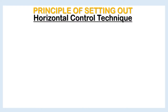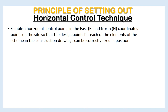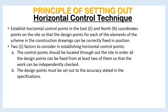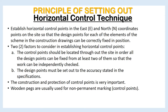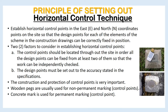The principle of setting out for horizontal control technique is to establish horizontal control points in the east and north coordinate positions on the site so that the design points for each element of the scheme in the construction drawings can be correctly fixed in position. Two factors to consider: control points should be located throughout the site so that all design points can be fixed from at least two of them, allowing independent checking; and design points must be set out to the accuracy stated in the specifications. Wooden pegs are usually used for non-permanent marking of control points, while concrete marks are used for permanent marking.